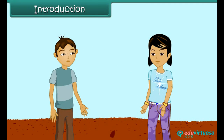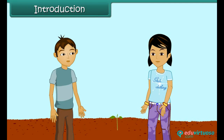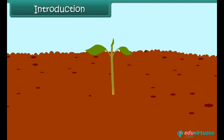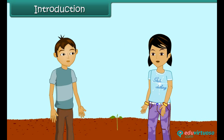Look, Ruchika, there is a new plant arising in the soil. Yes, there are only two small leaves coming up in the soil. Ruchika, do all the plants grow up like this only?